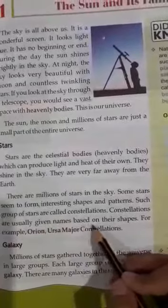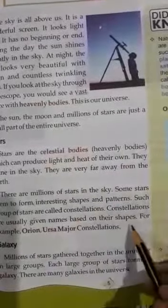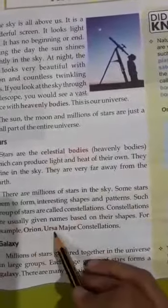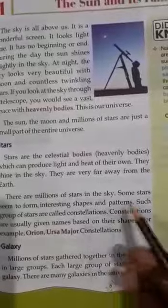Constellations are usually given names based on their shape. Nakshatr aam tor par diye jate hain unke akar ke aadhar par. For example: Orion, Ursa Major constellations. Udaharan ke liye Orion, Ursa aur pramukh constellation tara mandal. Constellation ka matlab tara mandal.